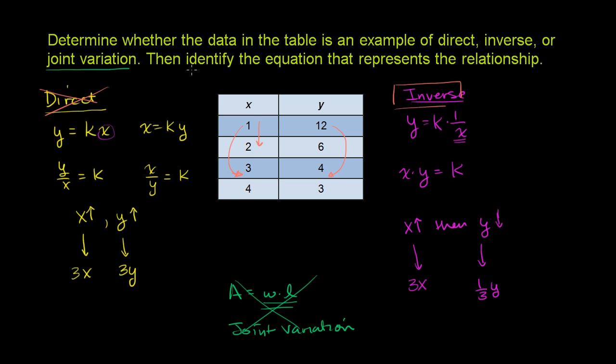Now, they ask us to identify the equation that represents the relationship. Well, we know with inverse variation, the product of x and y need to be equal to some constant. So if we take x times y over here, let me make another column here. Let me call this the x times y column.